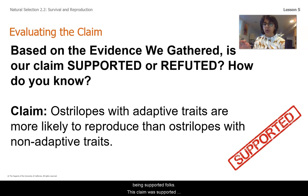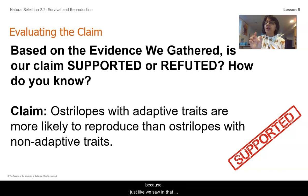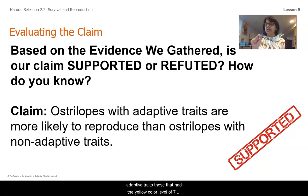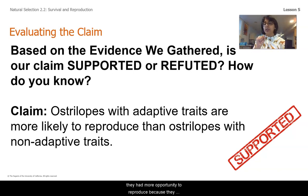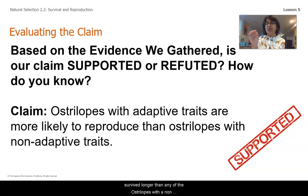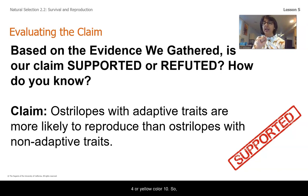This claim was supported. Our evidence supports it because, just like we saw in that simulation, the ostrilopes with adaptive traits — those that had a yellow color level of 7, which blended into the yellow 7 environment — had more opportunity to reproduce because they survived longer than ostrilopes with non-adapted traits, such as those with a blue color level of 1, 4, or yellow color 10.